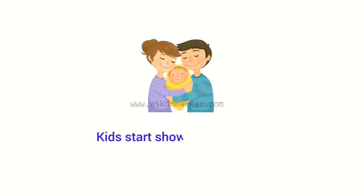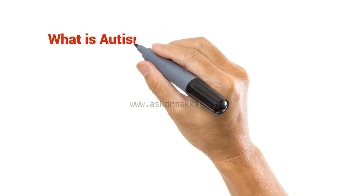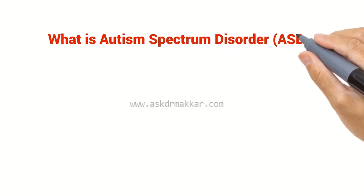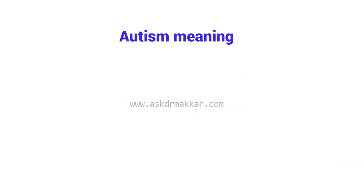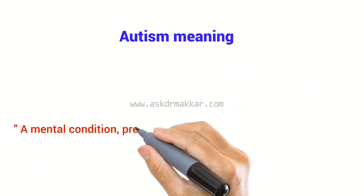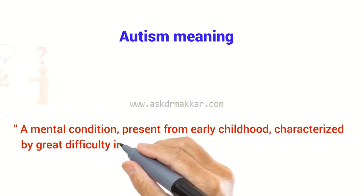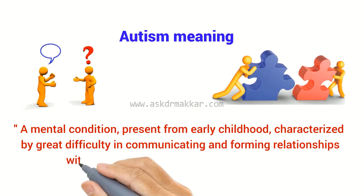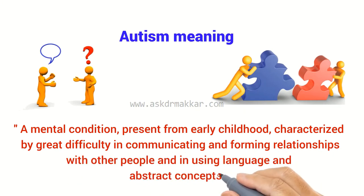Many parents feel that their kids start showing autistic traits suddenly after a period of normal development. Autism spectrum disorder, ASD — autism meaning a mental condition present from early childhood, characterized by great difficulty in communicating and forming relationships with other people, and in using language and abstract concepts.